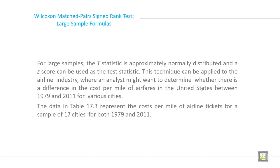Let's try to understand large sample formula for Wilcoxon matched pair sign rank test. For large samples, the T statistic is approximately normally distributed and a Z score can be used as the test statistic.